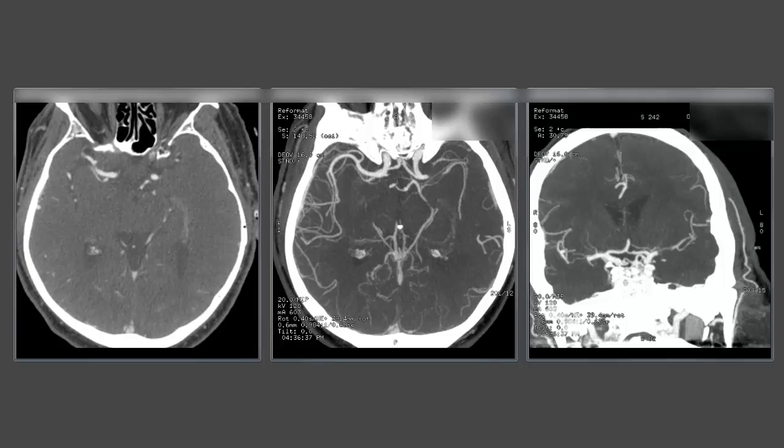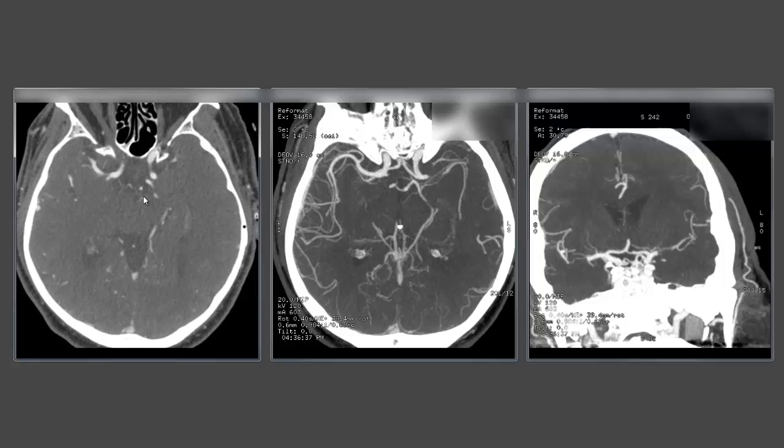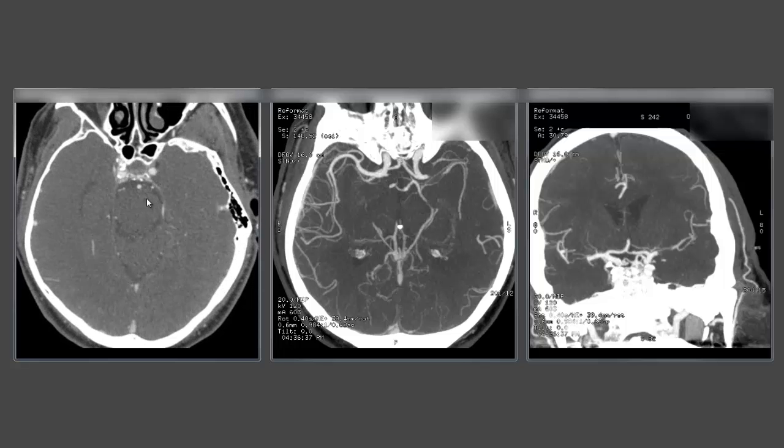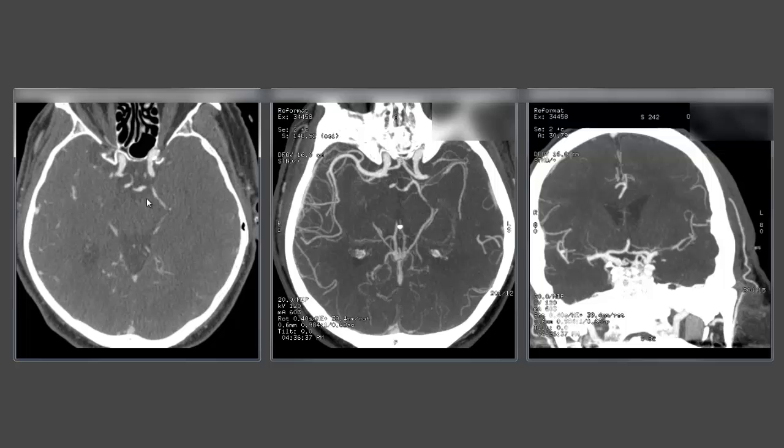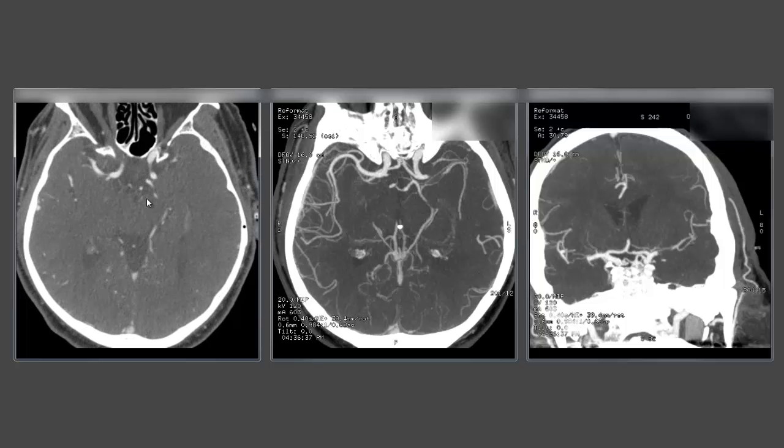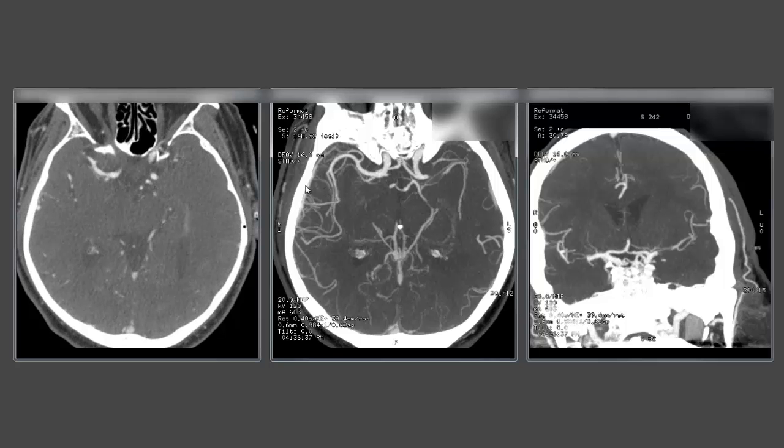A MIPS is a maximum intensity projection and it essentially consists of taking information from a set of source images, something very similar to these very fine cuts here. In this case 0.6 millimeter thick slices, putting together information across many of those slices into thicker wedges.